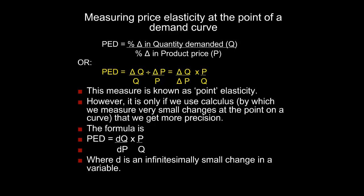Point elasticity is a measure of price elasticity at a point on the demand curve. However, it's only if we use calculus — by which we measure very small changes at the point of the curve — that we get more precision in our measure of elasticity. The formula for price elasticity of demand using calculus would be: PED is equal to DQ over DP multiplied by P over Q, where D is an infinitesimally small change in a variable.